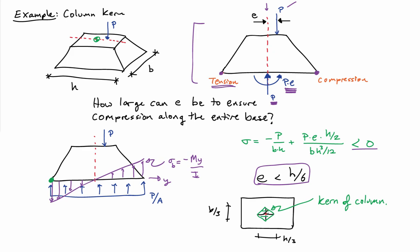If I apply the load anywhere inside the kern here, I'll be able to ensure that the entire face of the base of the column is always going to be in compression. That's a useful thing if you're designing a foundation to a building.